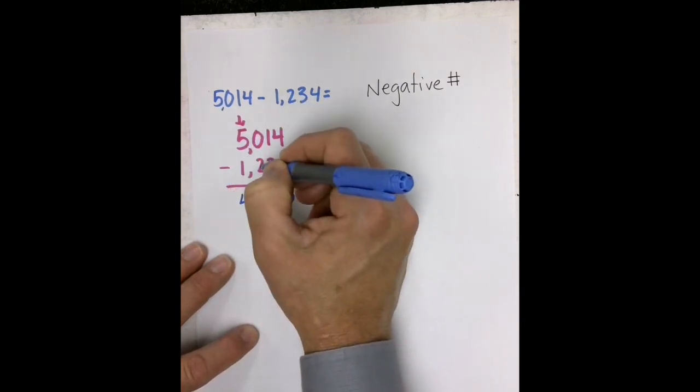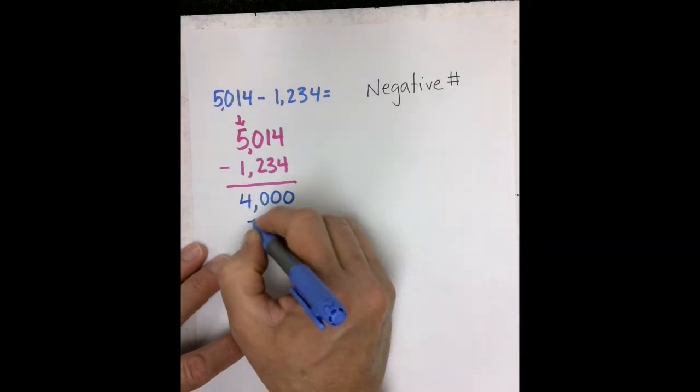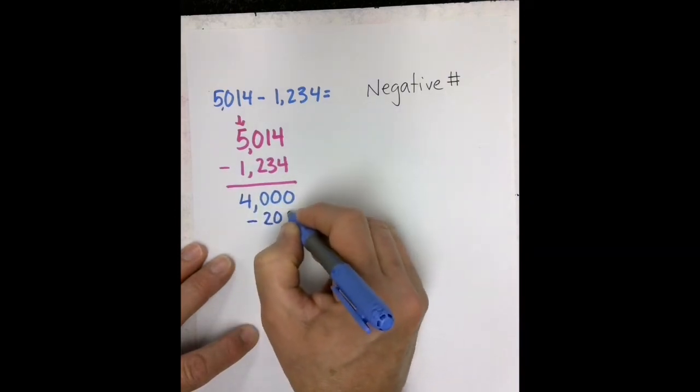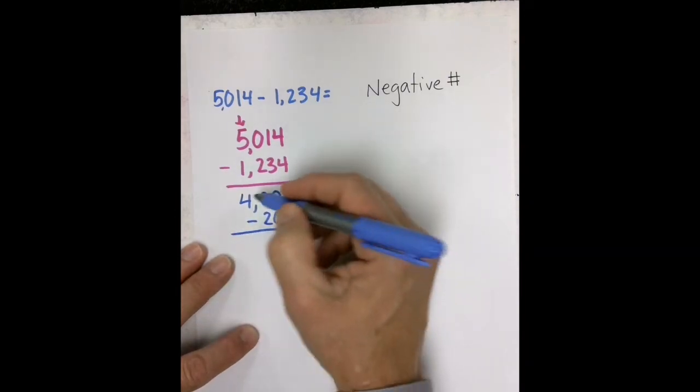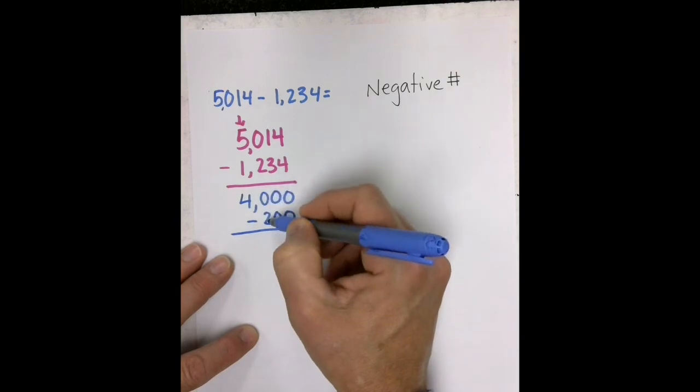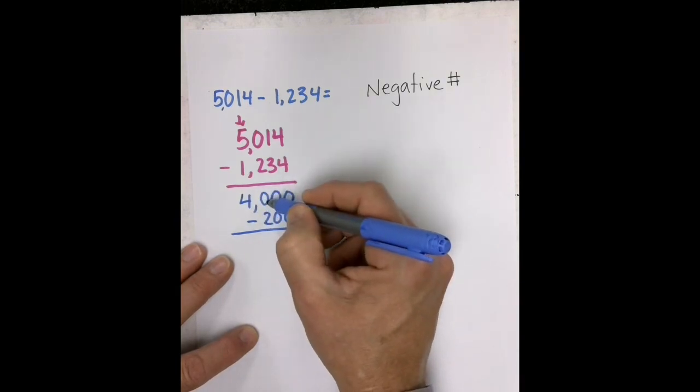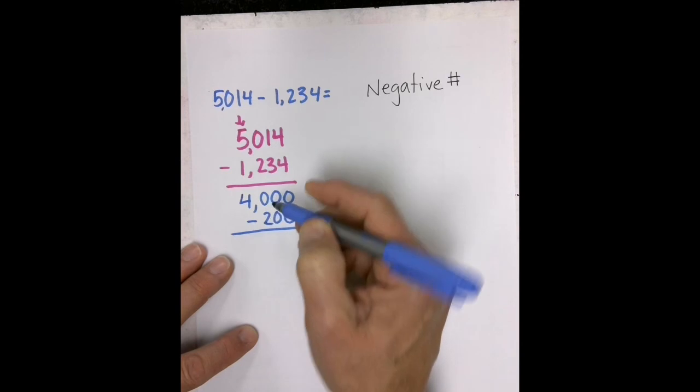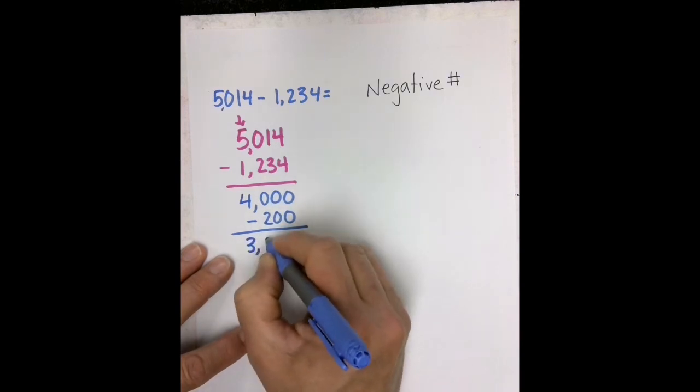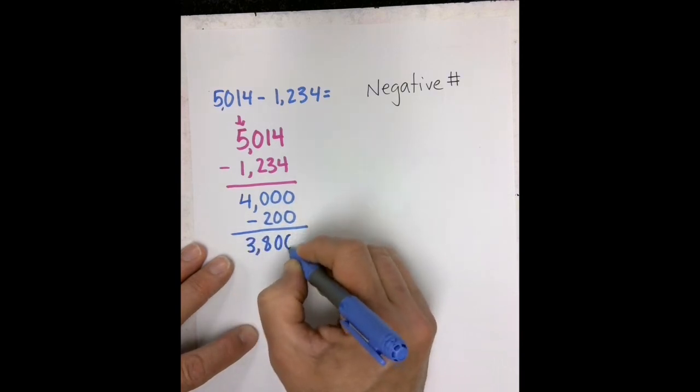0 minus 200 would be a negative 200. So this is very similar to 40 minus 2, because it's really 40 hundreds minus 2 hundreds, which would be 38 hundreds, or 3,800.